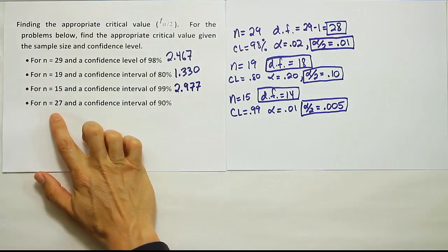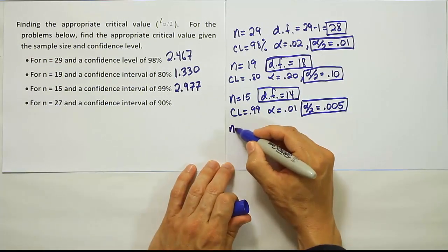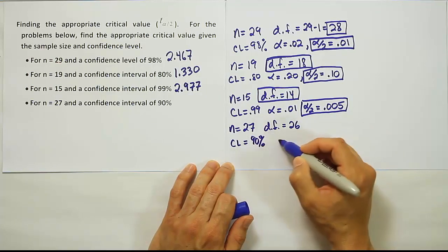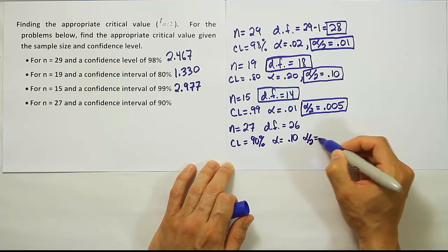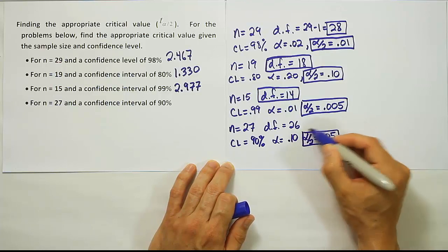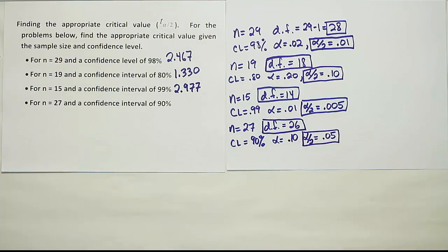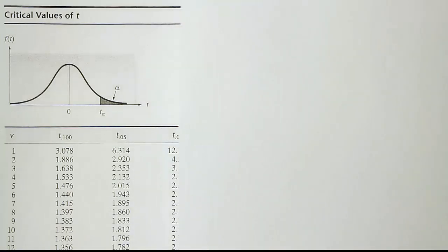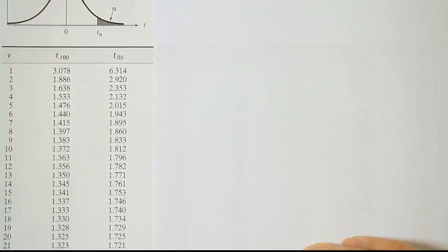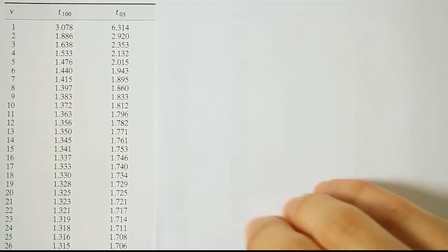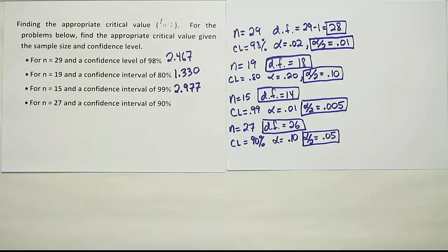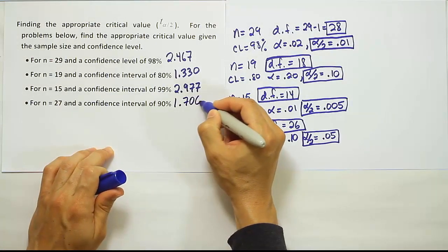The last problem has n equals 27 and a confidence level of 90%. For n equals 27, the degrees of freedom is 26. A confidence level of 90% means alpha is 0.10, and alpha divided by two is 0.05. Looking up 0.05 and 26 degrees of freedom on the T table — the 0.05 column is the second column — scrolling down to 26 degrees of freedom gives us 1.706. That's our final answer.